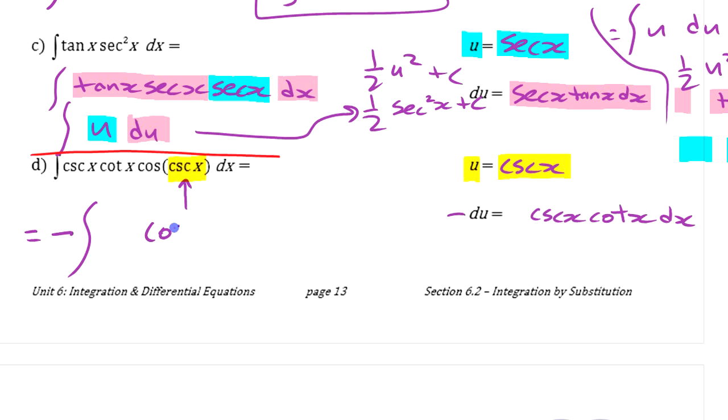So we have cosine of U, because we got cosine of that. And we have all of this stuff, cosecant x cotangent x dx. Cosecant x cotangent x, all of that becomes DU. All of that stuff becomes DU. So we've changed that into this much simpler integral. And if we want to work this out, well that's equal to minus integral of cosine is sine of U plus a constant, or sine of cosecant x plus a constant. That's it.